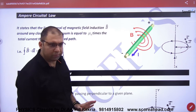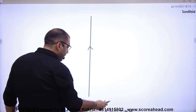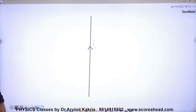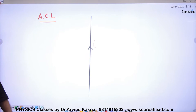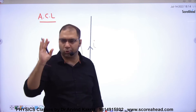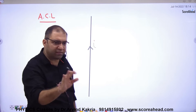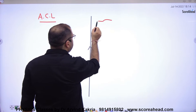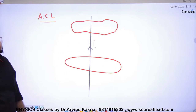What is Ampere's Circuital Law? Suppose you have a current-carrying wire — it could be straight or some other shape. According to Ampere's Circuital Law, you can take a closed path around this wire. This closed path can be circular or any arbitrary shape — what matters is that it is a closed path.